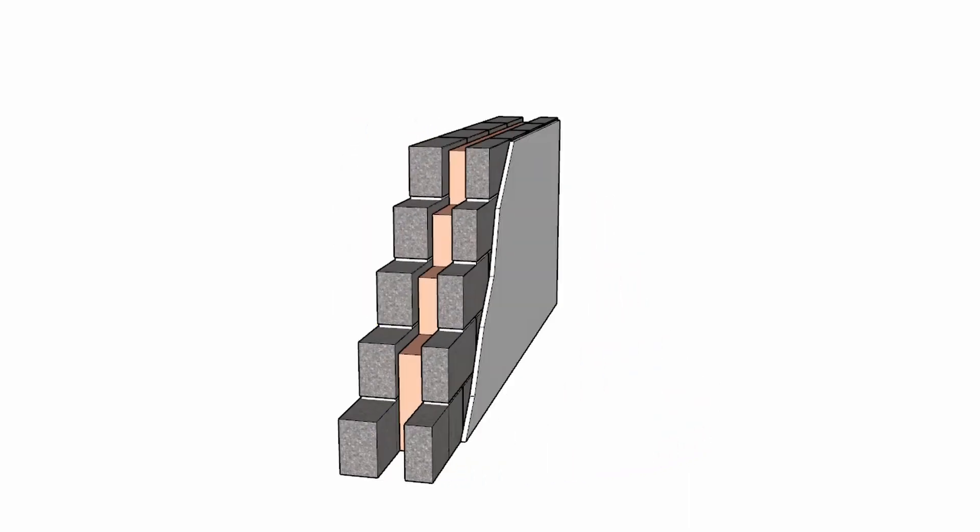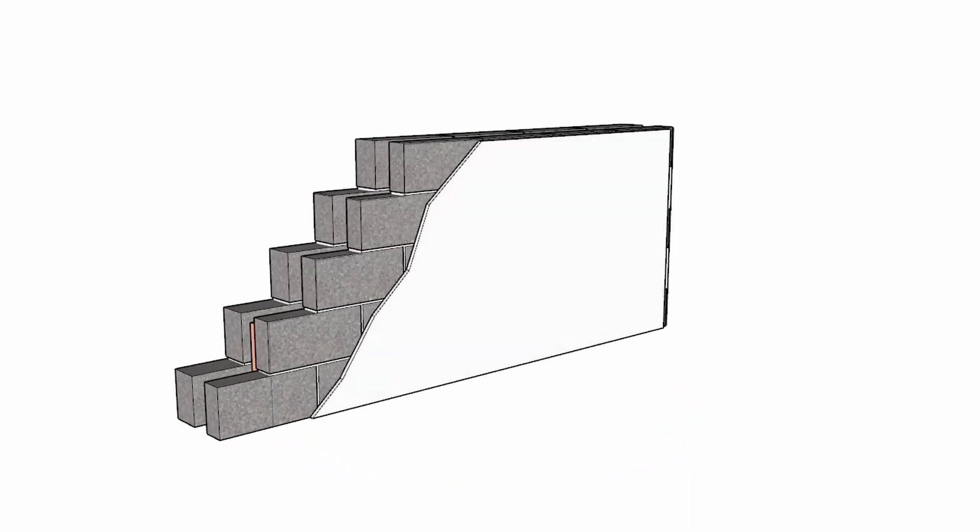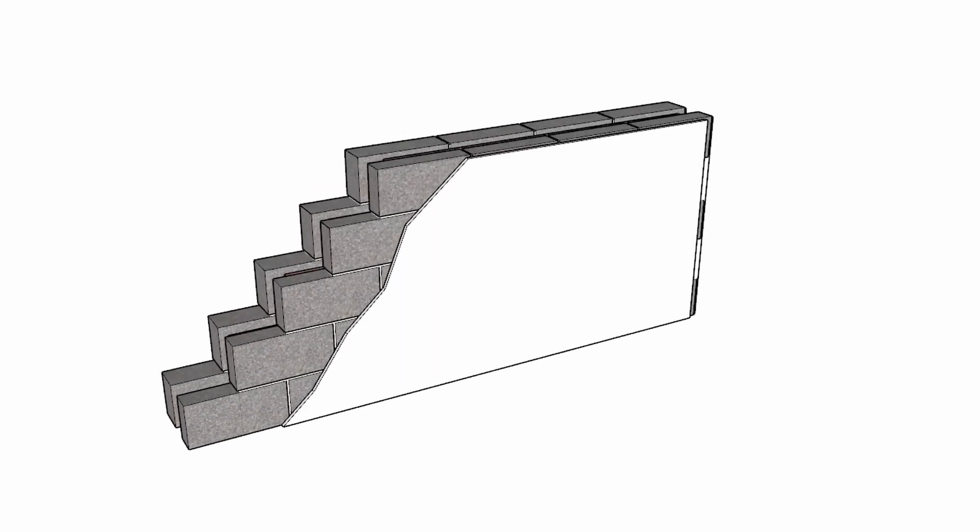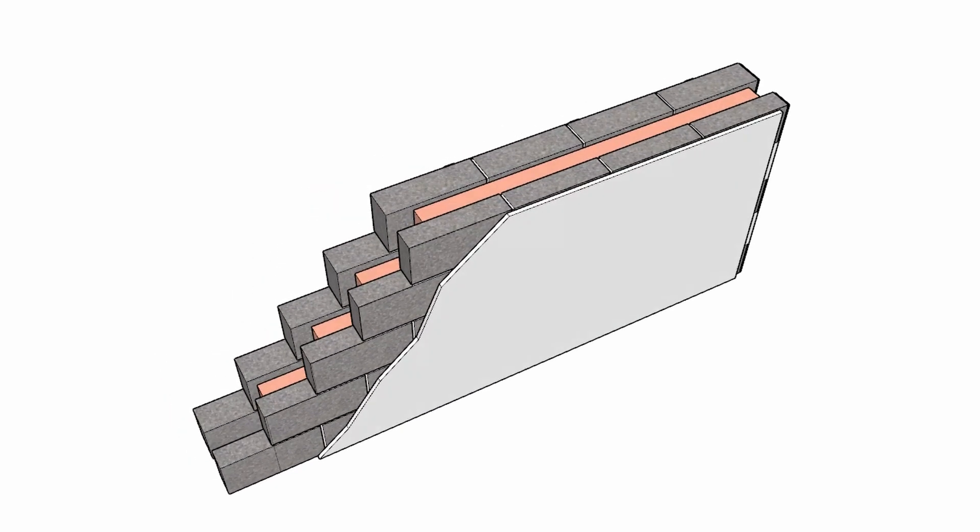So it's a very simple example and for this we're going to ignore any cold bridges and the bridging effect of the timber. This is really just so that we can see a very simplified example. If you were doing this in real life, you would consider all of those bridging elements.